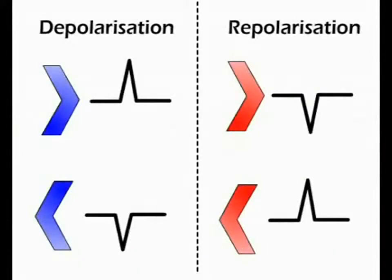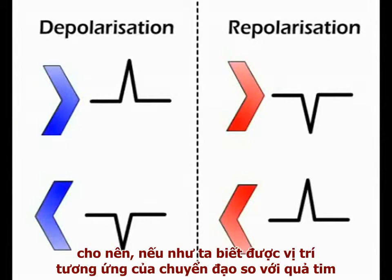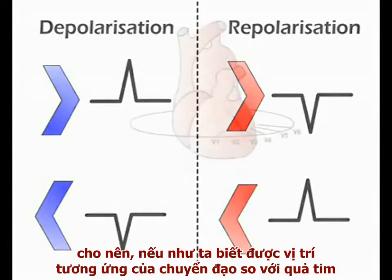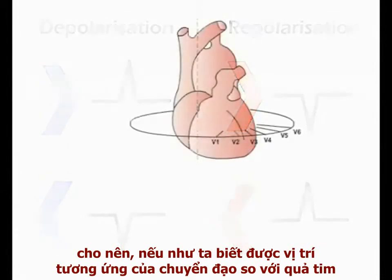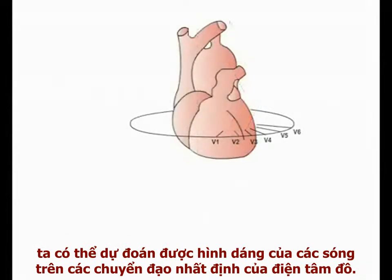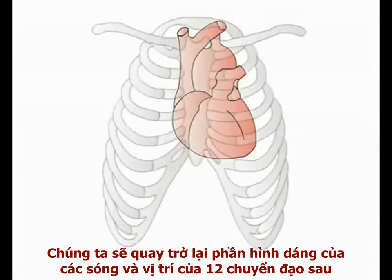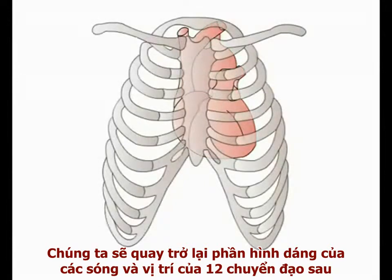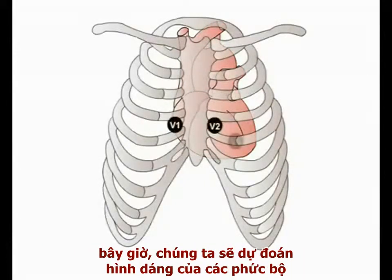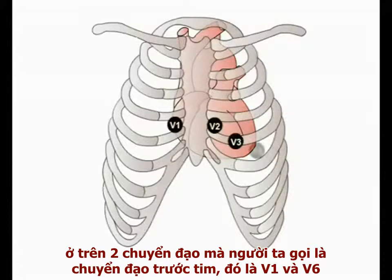As the depolarization and repolarization waves spread over the normal heart in a well-defined and relatively constant pattern, these rules mean that if we know the position of an ECG lead relative to the heart, we can predict the form of readout it records. We'll come back to the nomenclature and position of all 12 leads later, but for now let's see how this works in two of the six so-called chest leads, V1 and V6.